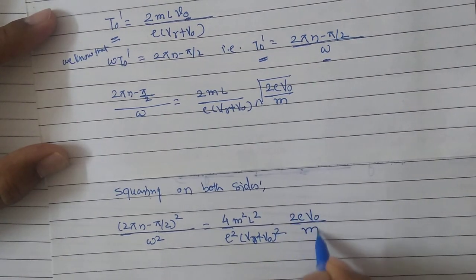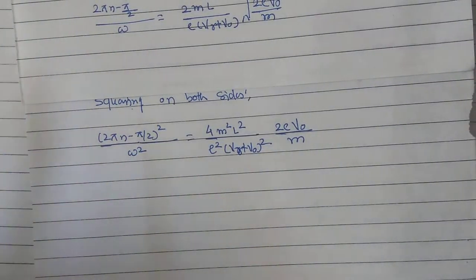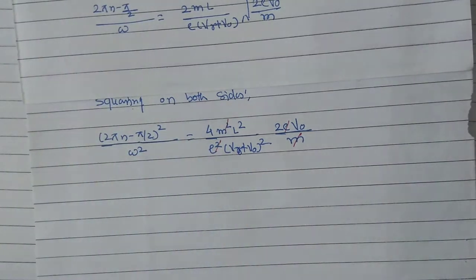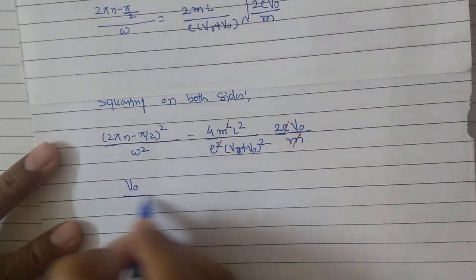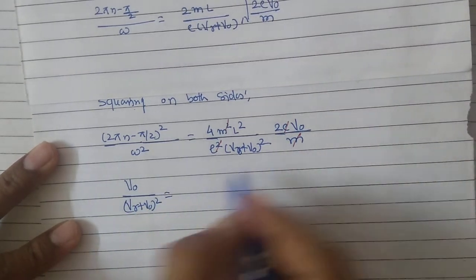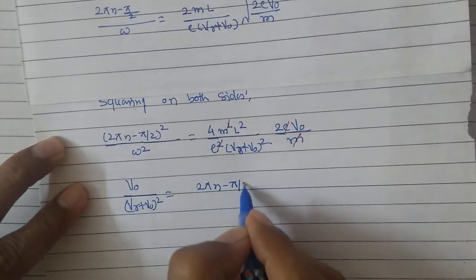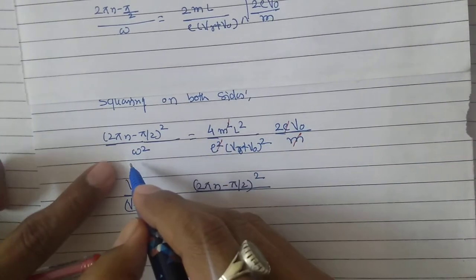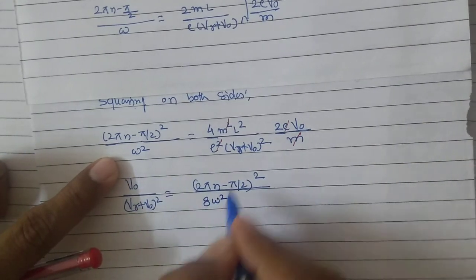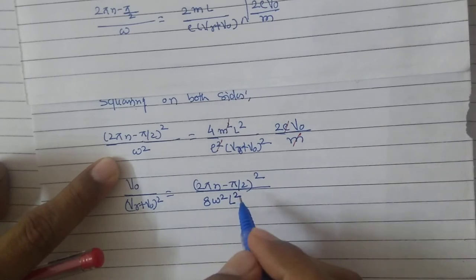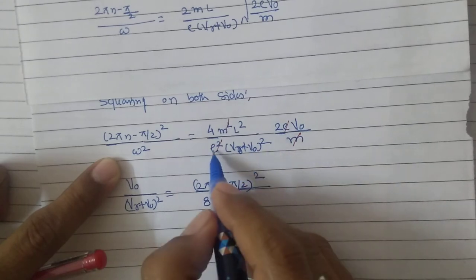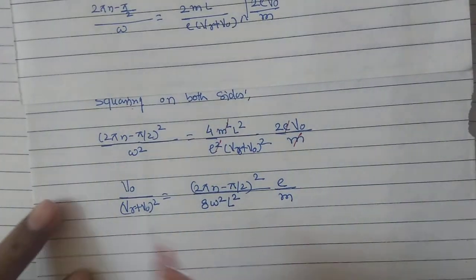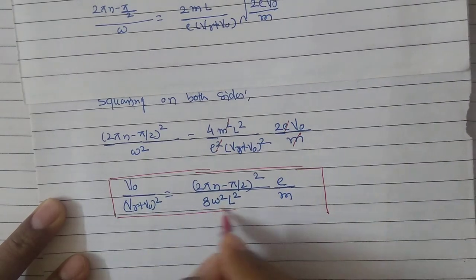Squaring both sides: (2 pi N minus pi/2)² / omega² = 4m²L² / [e²(Vr+V0)²] × (2eV0/m). Cancelling one m and one e from numerator and denominator, we finally obtain: V0 / (Vr + V0)² = (2 pi N minus pi/2)² / (8 omega² L² × e/m). This is the proven relationship between anode voltage V0 and repeller voltage Vr.